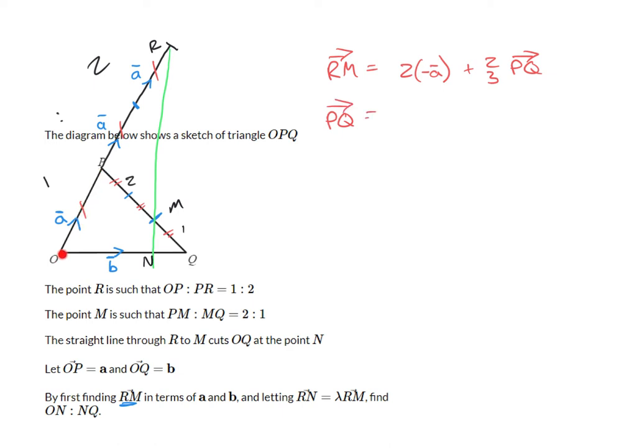Well, PQ goes from P to O to Q. So that's nice. That's minus a plus b. So that's actually not too bad. Minus a plus vector b. So putting those together, I have R to M is equal to minus two a plus two-thirds of minus vector a plus vector b. And when I work that through, I've got minus two-thirds of vector a plus two-thirds of vector b.